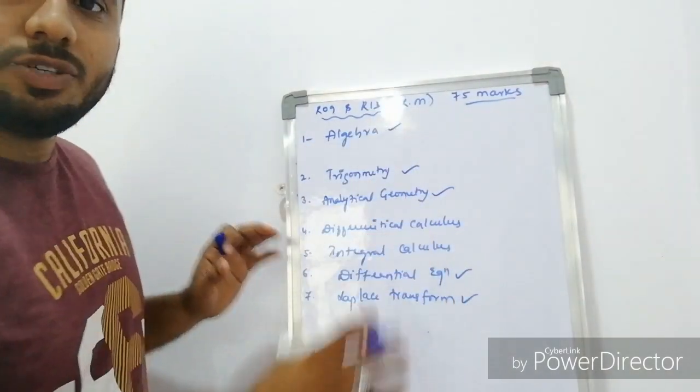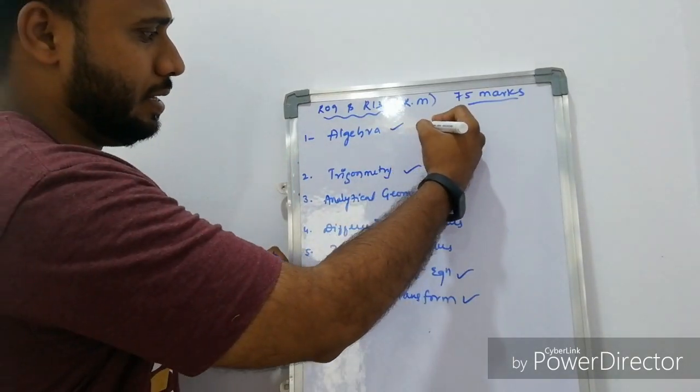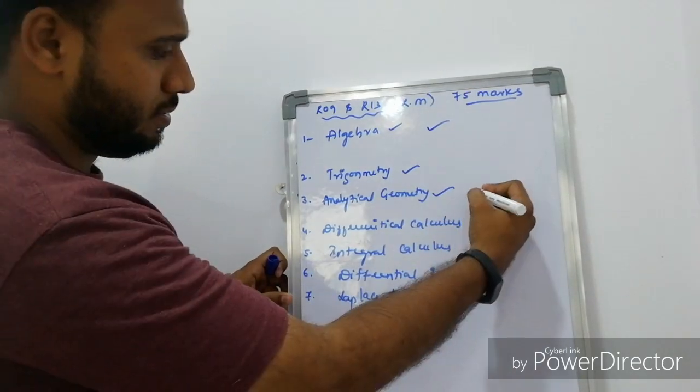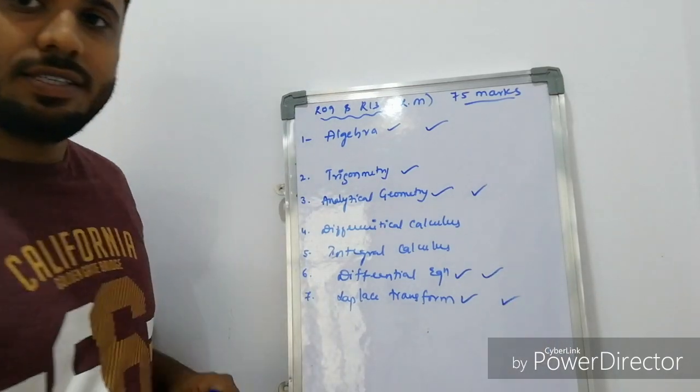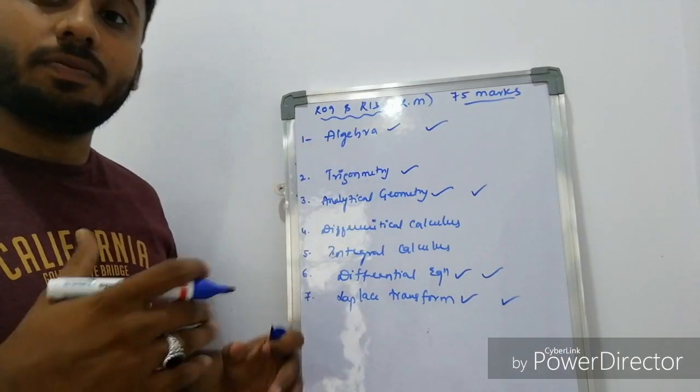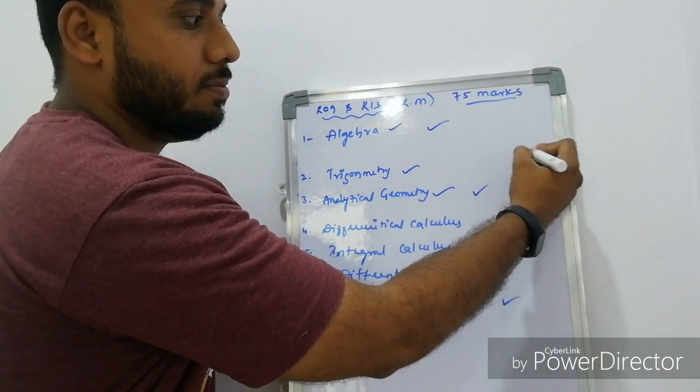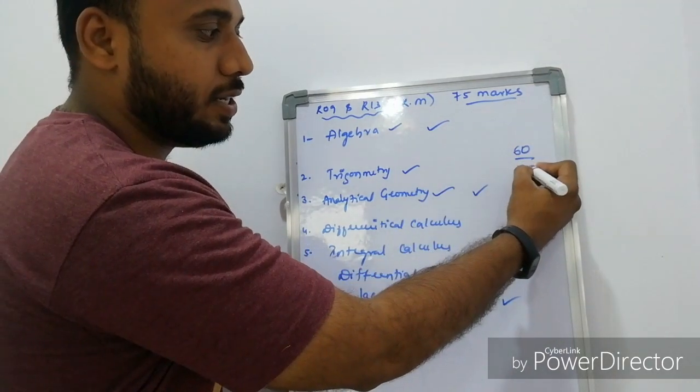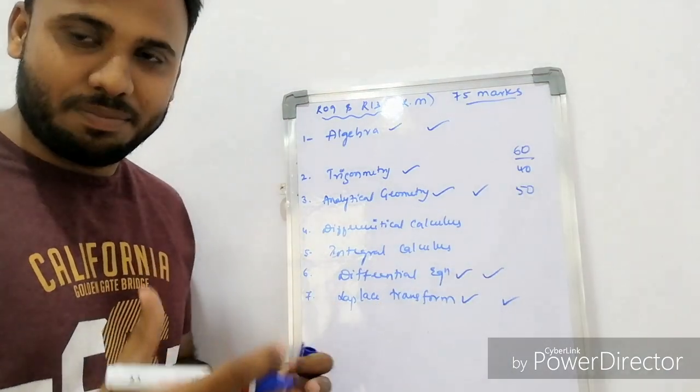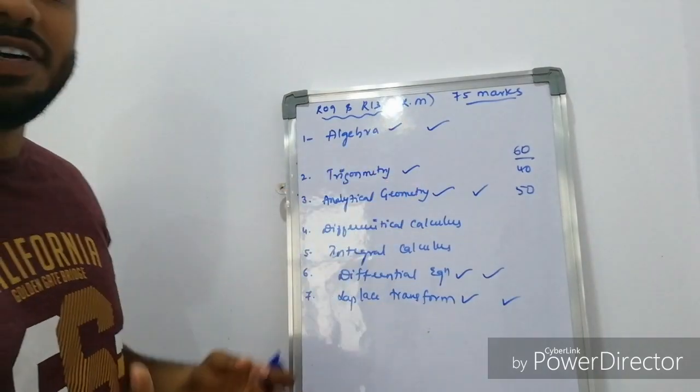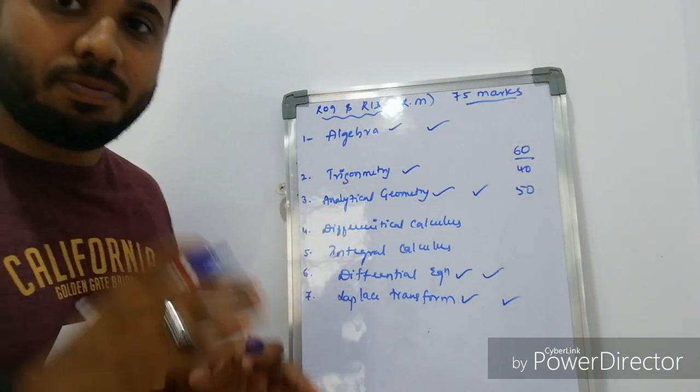For the purpose of pass, you have to cover minimum 60 marks of syllabus out of 75. Then only you can get easily 40 to 45 marks. Otherwise, if you are covering the syllabus which is less than 40 marks, then you are definitely going to fail in the subject. Minimum, you have to cover 4 units for the purpose of pass.